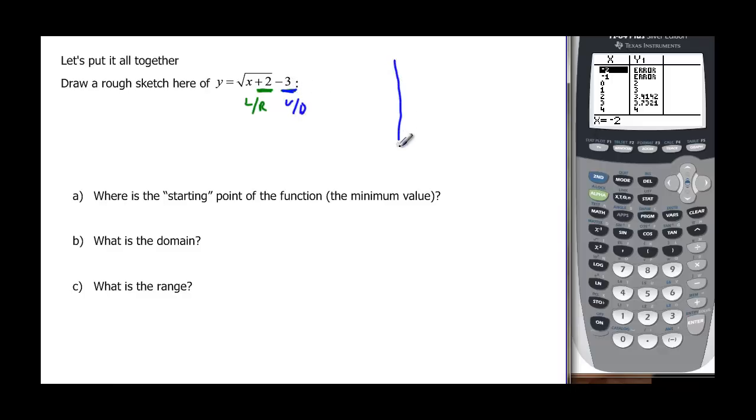Let's sketch it first before we verify with a calculator. It's plus 2. Remember those are always backwards, so we're at negative 2. But then this tells me I go down 3 because it's minus 3. So 1, 2, 3. This should be where I'm starting. And it's a positive radical so it should increase.